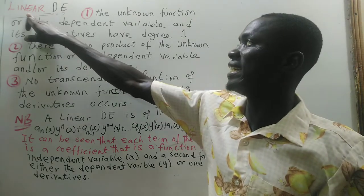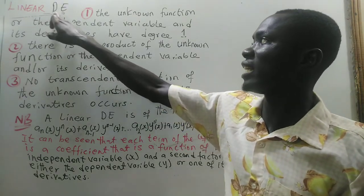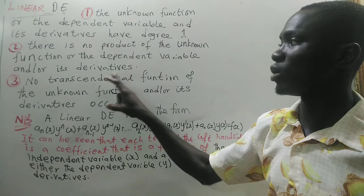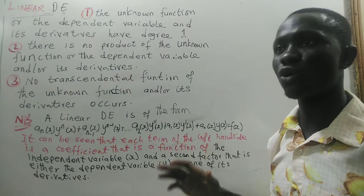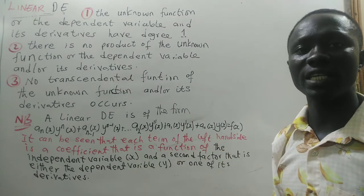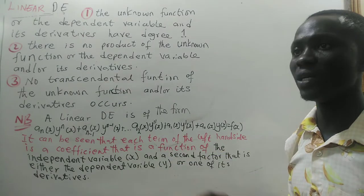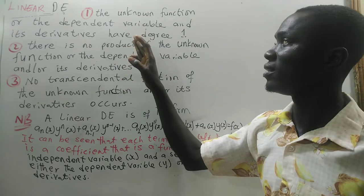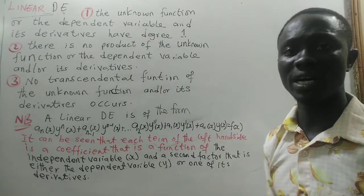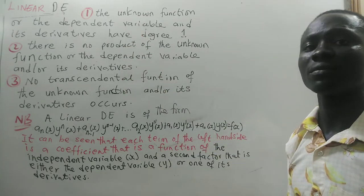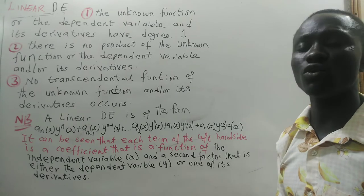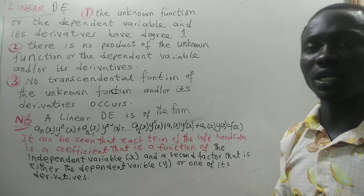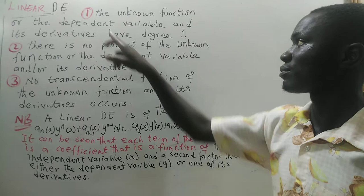If we talk about linear differential equations, these 3 conditions must be satisfied before the differential equation is considered linear. If any one of these conditions is not satisfied, then the differential equation becomes nonlinear. So, let's look at the conditions one after the other.